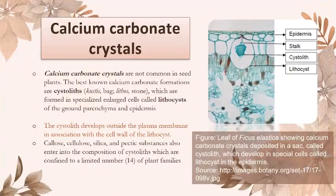Calcium carbonate crystals are not common in seed plants. The best known calcium carbonate formations are cystoliths, which are formed in specialized enlarged cells called lithocysts of the ground parenchyma and epidermis — for example, in the leaf of Ficus.